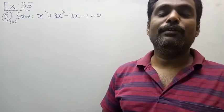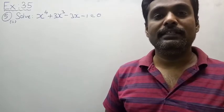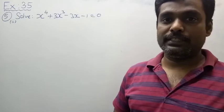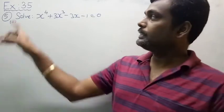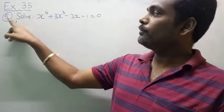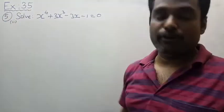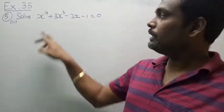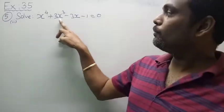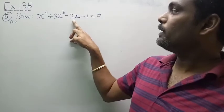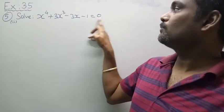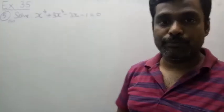Hi, my dear students. Today we will discuss chapter 3, Theory of Equations — exercise 3.5, question number 5, second option. Solve x⁴ + 3x³ - 3x - 1 = 0.